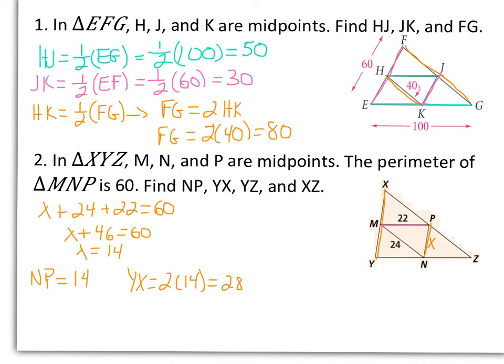MP is parallel to YZ, so YZ will be twice the length of MP, or 2 times 22, which is 44.